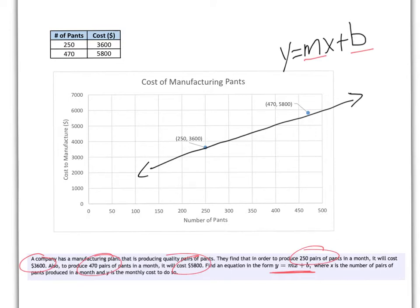First, let's find the horizontal change. The horizontal change is the change between 250 and 470. It's a change, a difference of 220. The vertical change is the change between 5,800 and 3,600. That's a change of 2,200.